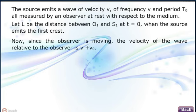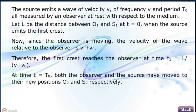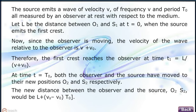Now, since the observer is moving, the velocity of the wave relative to the observer is v plus V0. Therefore, the crest reaches the observer at time T1 equals L by (v plus V0). At time t equals T0, both the observer and the source have moved to their new positions O2 and S2 respectively. The new distance between the observer and the source would be L plus (Vs minus V0) into T0.